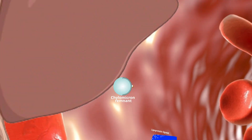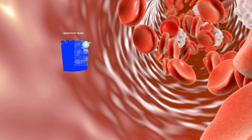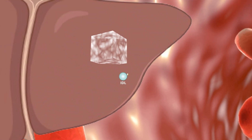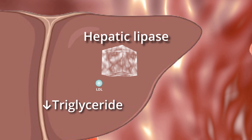Chylomicron remnants are taken up by the liver. VLDL, which is converted to IDL, is further hydrolyzed by hepatic lipase to lose ApoE, forming LDL with lower triglyceride and higher cholesterol content.